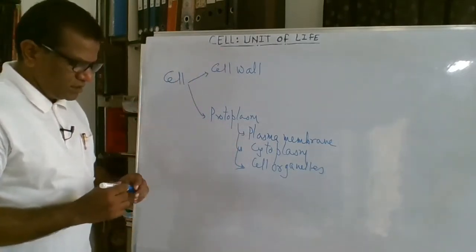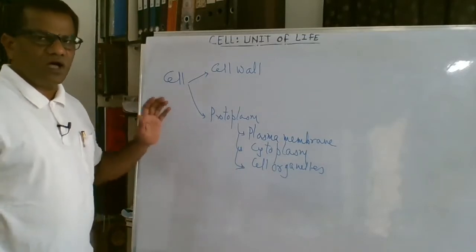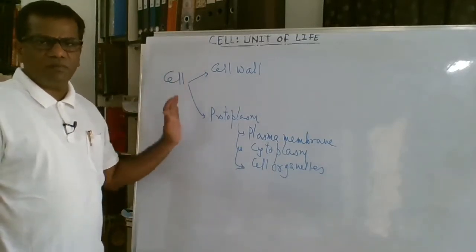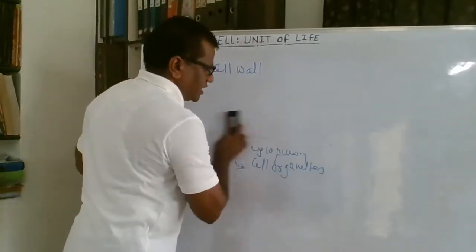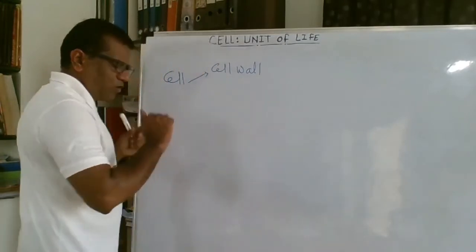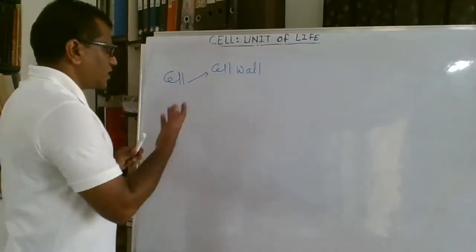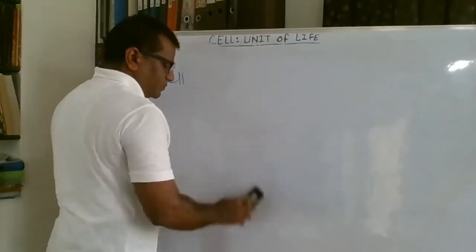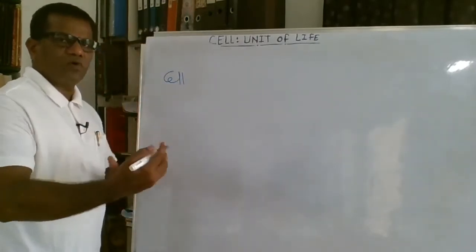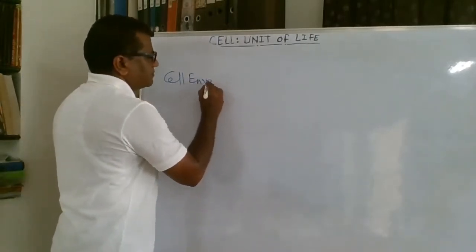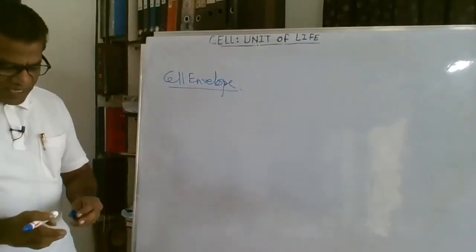The cell wall is absent in some organisms like animals, but in the majority of organisms the cell has these two components. Now let us discuss them one by one. First we will discuss the cell wall. In the case of the prokaryotic cell, the cell wall is different, and instead of calling it cell wall, we call it the cell envelope.